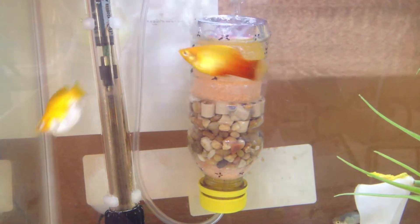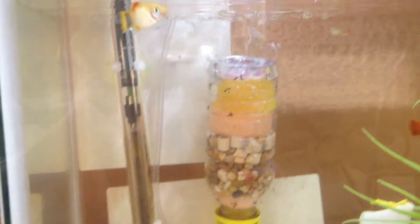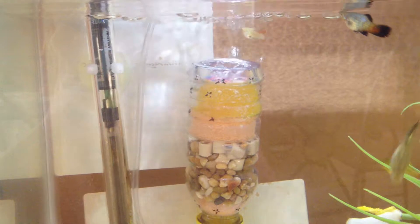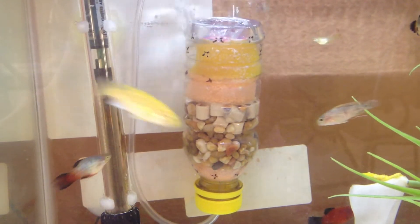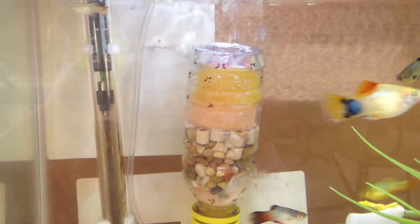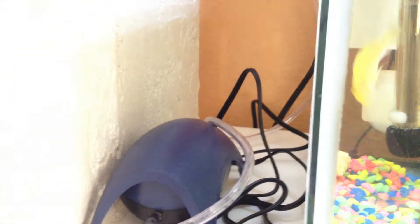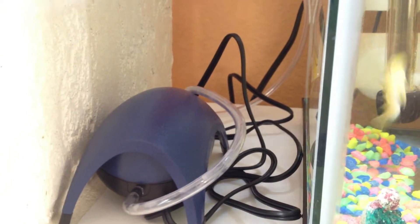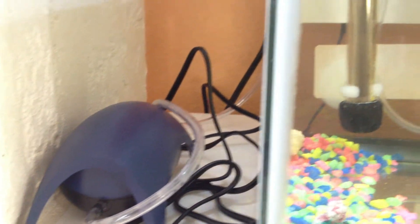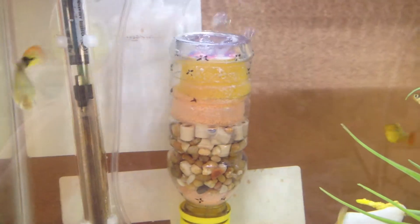You can always change the way it comes out by moving the filter up a little bit more to the water level, and next time I can always make the hole smaller, but I like it bubbly like that actually. For the air pump I'm just using the Whisper 10 which only has the one attachment here, and it's pretty quiet so it works out really great for me.